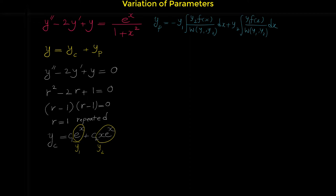Let me remind you how to find the Wronskian in general. The Wronskian of two functions equals a 2×2 determinant whose first row is y₁ and y₂, and whose second row is y₁′ and y₂′ — the derivatives of those functions. Evaluating the determinant gives: Wronskian equals y₁·y₂′ minus y₂·y₁′.